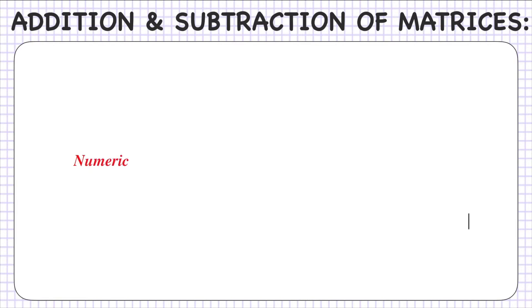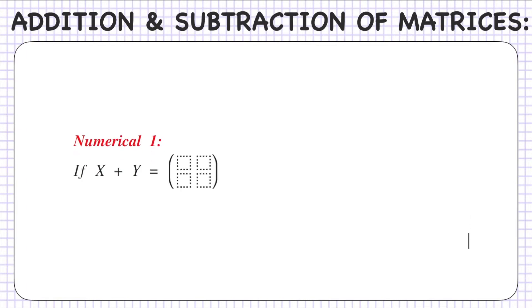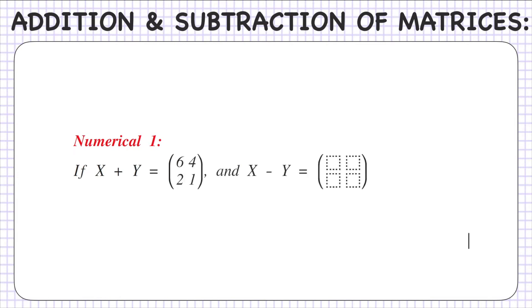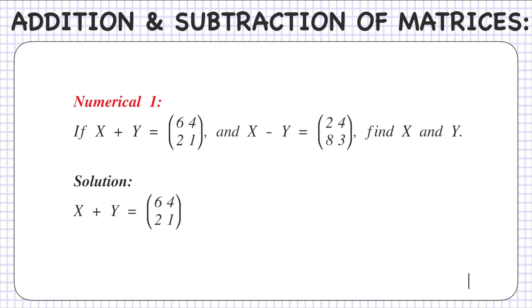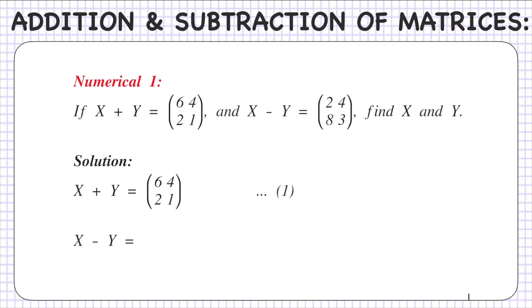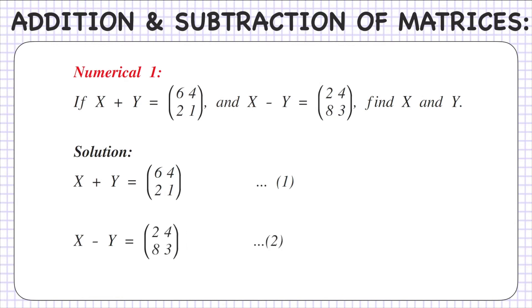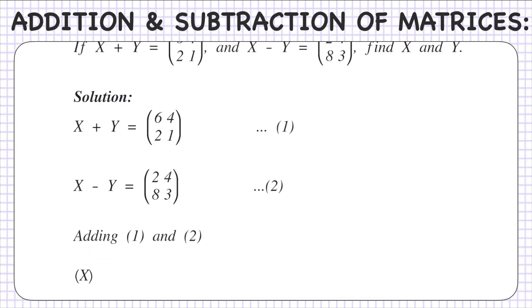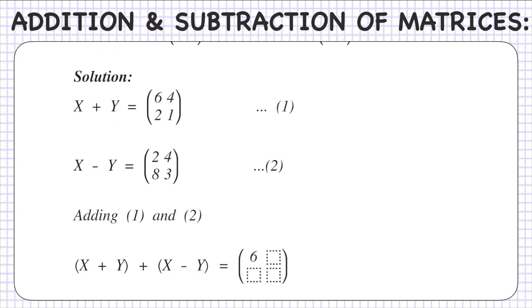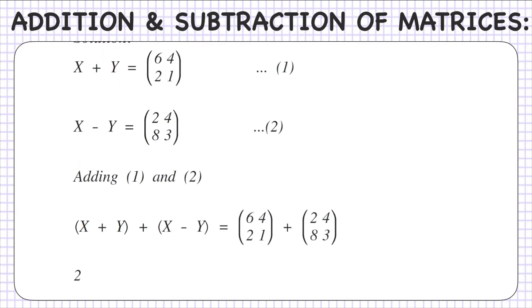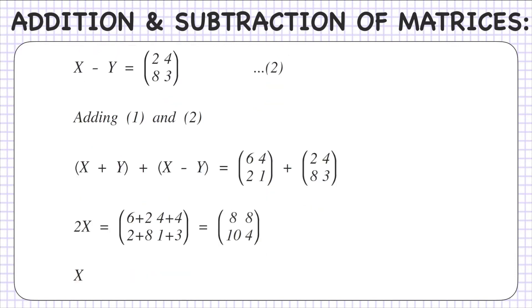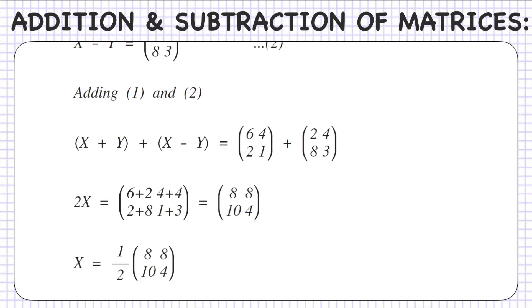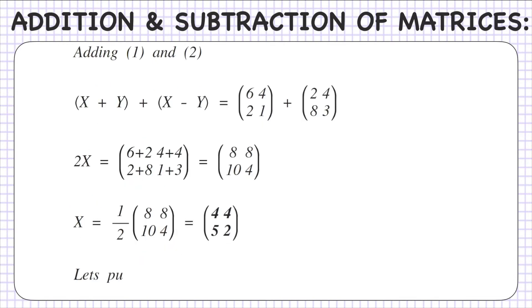Now let's solve a numerical based on addition and subtraction of matrices. If X+Y equals [6, 4, 2, 1] and X-Y equals [2, 4, 8, 3], find X and Y. Adding equation 1 and equation 2, the Y terms cancel and we get 2X equals [6+2, 4+4, 2+8, 1+3] which is [8, 8, 10, 4]. Therefore X equals (1/2)[8, 8, 10, 4] which gives X equals [4, 4, 5, 2].